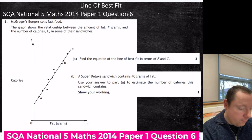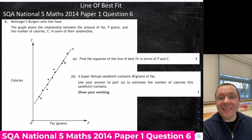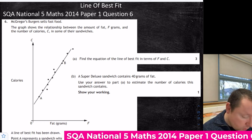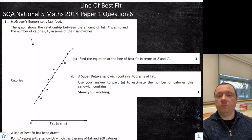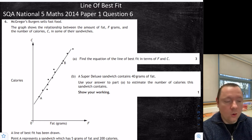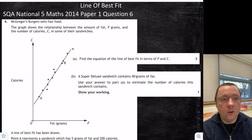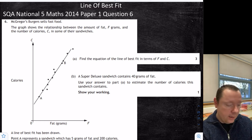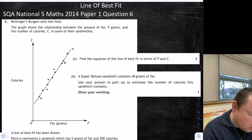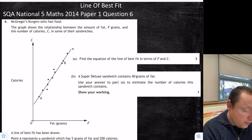Moving on to line of best fit — this is basically a straight line question but it comes in the stats topic because it uses real-world data. It's all just straight line with a little extra bit. Let's look at one of the questions: 2014 National 5 Maths Paper 1 Question 6.